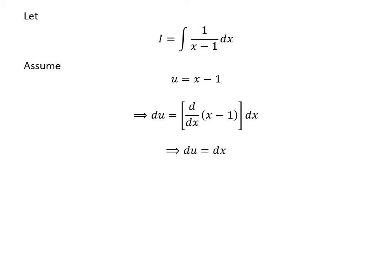As the derivative of x minus 1 with respect to x equals 1, so du equals dx. Substituting x minus 1 by u and dx by du gives us I equals the integral of 1 over u with respect to u.